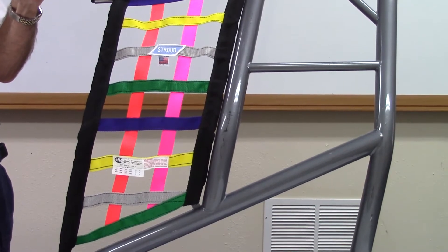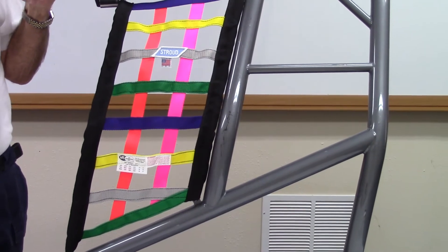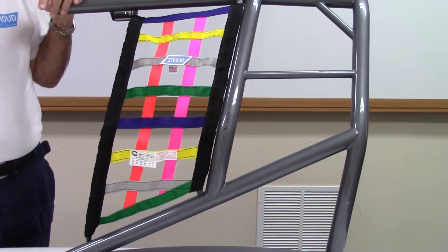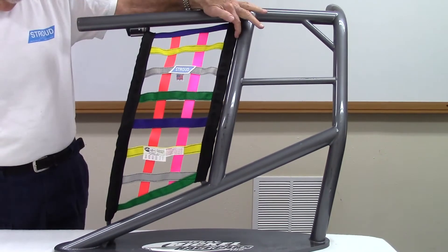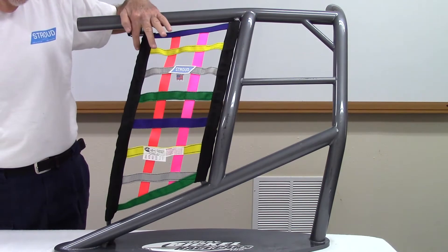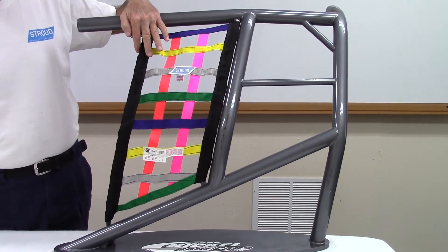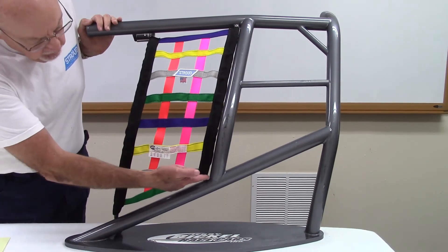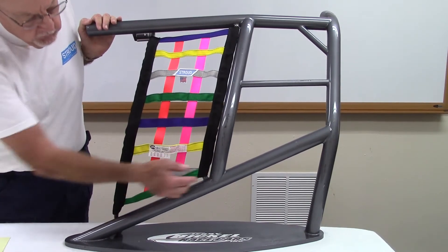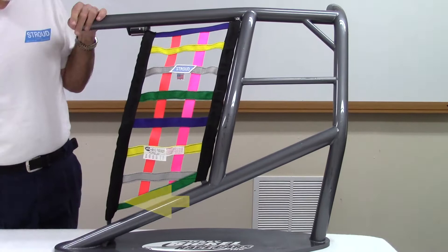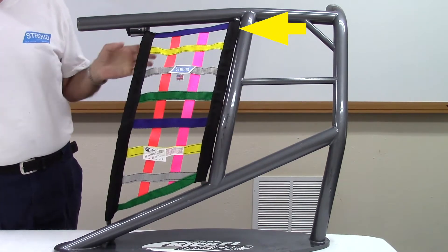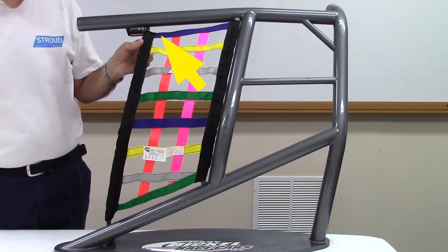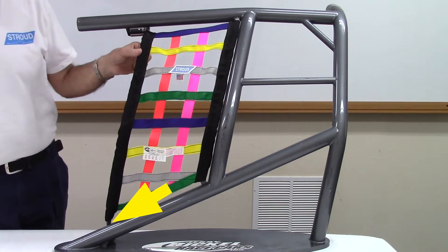The SFI Foundation, which Stroud Safety complies with, has the following minimum standards for window and door nets. The width of the net from the vertical tube rearward of the driver's head to the front of the net is 10 inches. The vertical length must reach to the bottom opening of the window or door. The fixed mounting of the net must be at the bottom or back of the opening. Release points must be at the top or front of the opening.